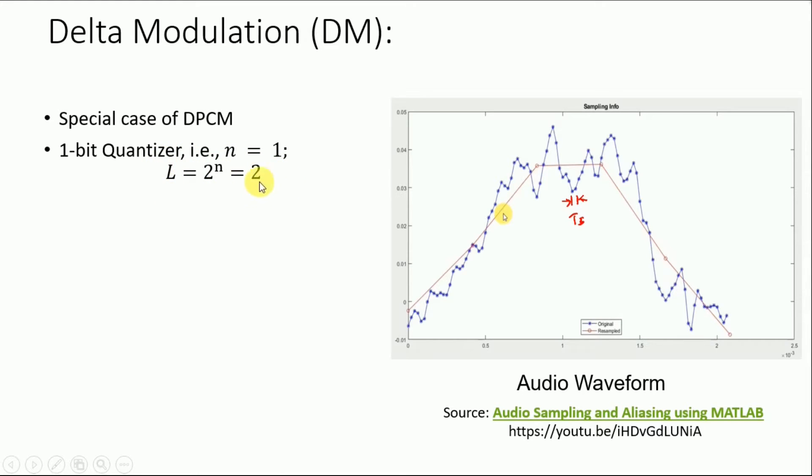Now an important consideration that we need to take into account is that the sampling frequency needs to be much higher than the Nyquist rate, so it should be approaching four times. The reason for that is, as I mentioned, this is our sampling time. So for Delta modulation, we only have two quantization levels.